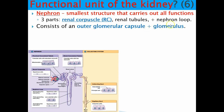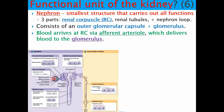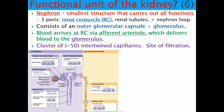Blood reaches the glomerulus via the afferent arteriole — afferent means delivering toward. The glomerulus is a cluster of approximately 50 intertwined capillaries, providing tons of surface area to promote filtration, represented by a green arrow. This is the only site along the nephron where filtration occurs. Blood then leaves via the efferent arteriole — efferent means exiting or going away.